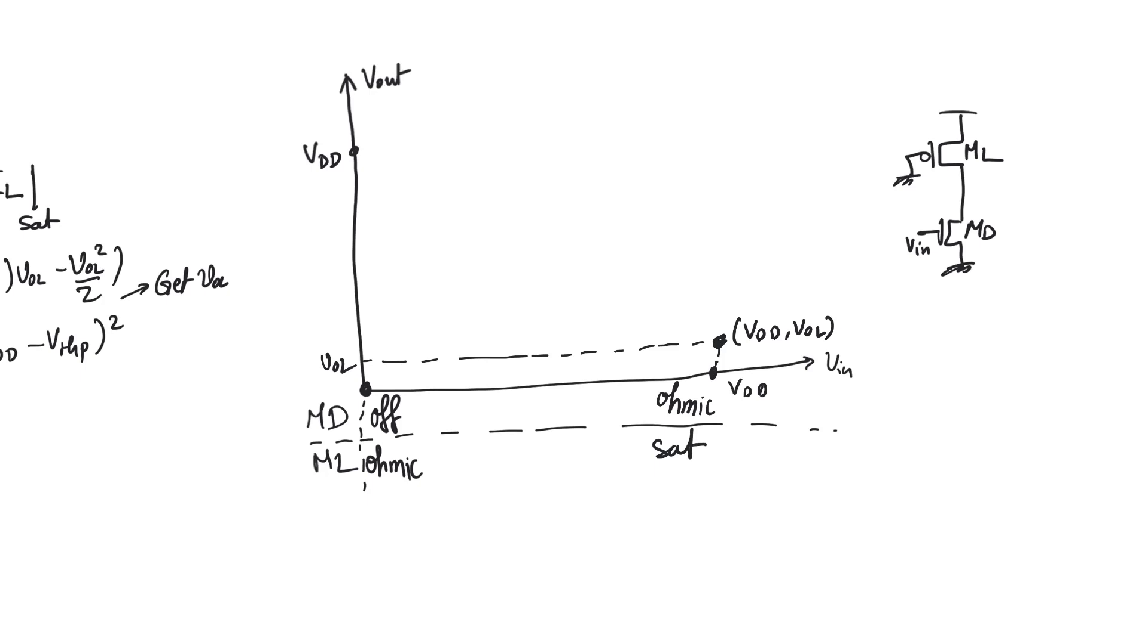As always, the driver is going to continue to be cut off until V input is equal to V threshold N, in which case the driver will turn on. And thus the output will continue to be VDD until the driver turns on. When the driver turns on, it will turn on in saturation because it will turn on in a condition in which its drain potential is at a very high voltage and its gate potential is at a very low voltage. So it turns on in saturation first. We know that it will stop being saturated and become ohmic eventually.